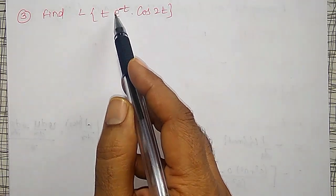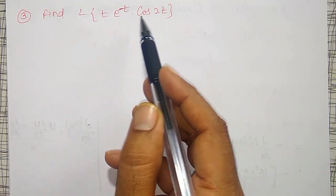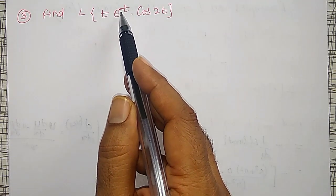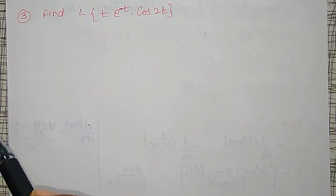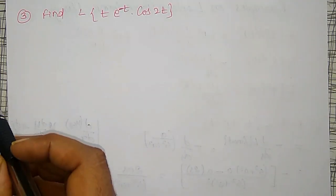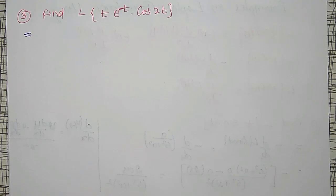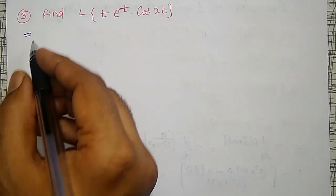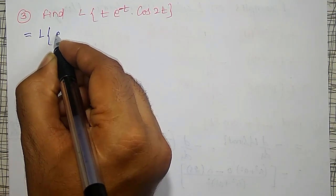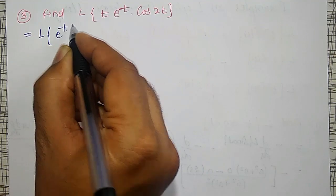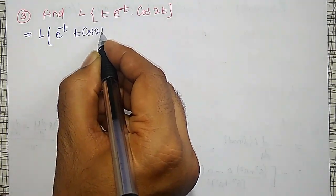I will select the simplest way first. That is, I can write it as the Laplace transform of e to the power minus t times t cos 2t. I will treat t cos 2t as my f of t, then using the first shifting property, I can write it as the Laplace transform of t times cos 2t with s replaced by s plus 1.